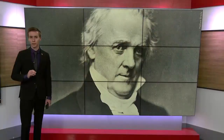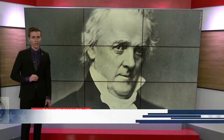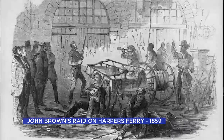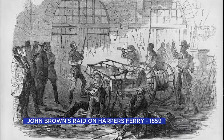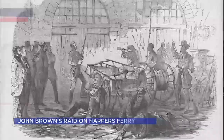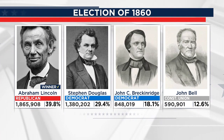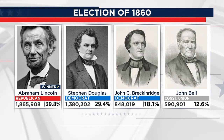Crisis after crisis embroiled Buchanan's time in office, such as the economic panic of 1857 and John Brown's raid on Harper's Ferry in 1859, where 16 people were killed. Tensions were at an all-time high, and by the election of 1860, the Democratic Party split in two, each nominating their own candidate, none of whom were Buchanan.